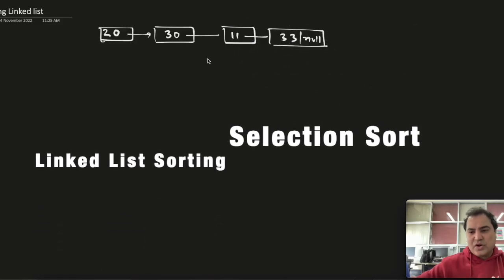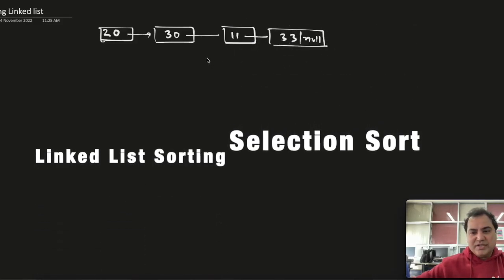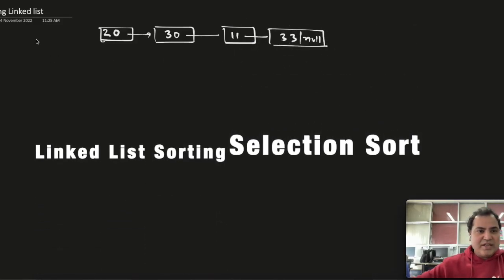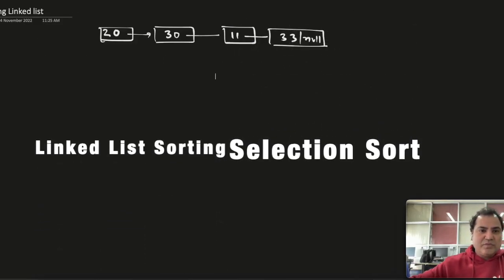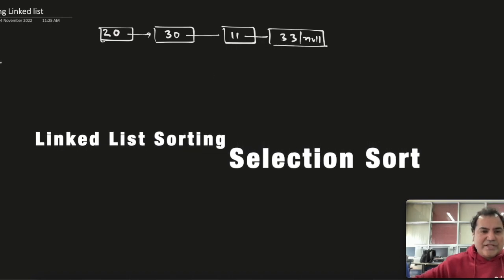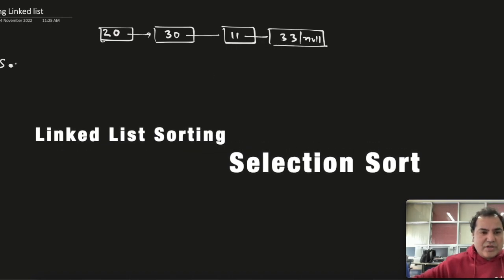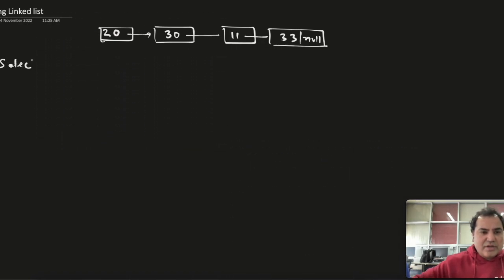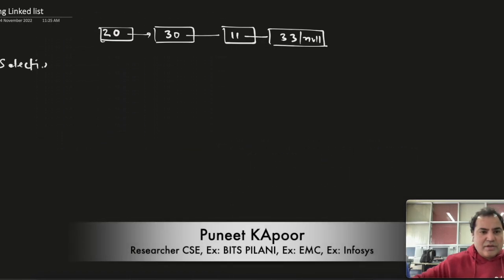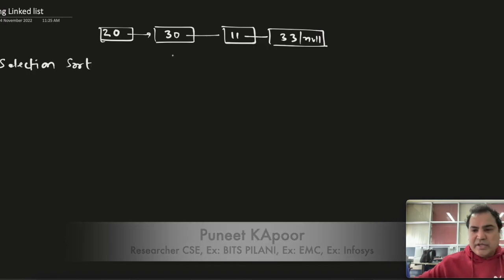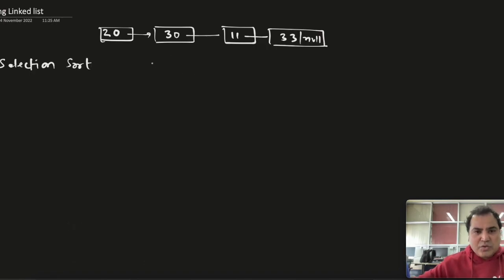Today we will see how to sort a linked list. I will be implementing selection sort in the linked list. The procedure is: we will take two pointers, p and q.